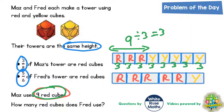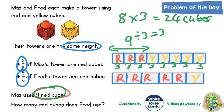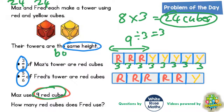Now the whole tower would be all eight sections. And if each section is worth 3, the whole tower is worth eight lots of three, which is 24 cubes. So Maz's tower is 24 cubes tall. Now it does say their towers are the same height, so if Maz's tower is 24 cubes tall, then Fred's tower is also 24 cubes tall.